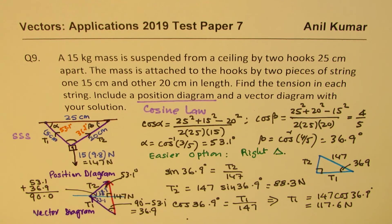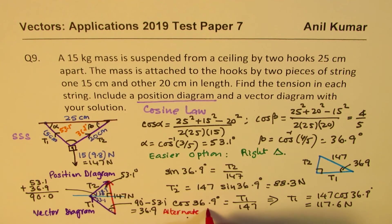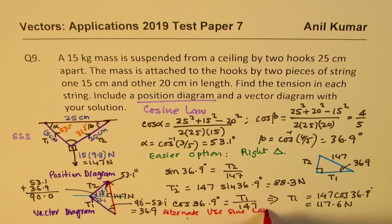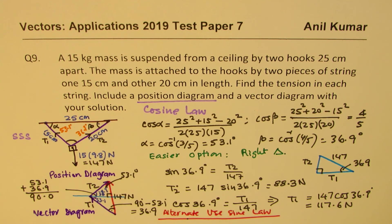That is how we solve it when the angle turns out to be 90°. The alternate approach is to use the sine law. I hope you understand how to draw a position diagram, how to draw a vector diagram, and how to solve for the tensions when all lengths are given. Always remember: multiply the mass by gravitational acceleration (9.8 m/s²) to get the net downward force. Feel free to comment, share your views, and subscribe. Thanks for watching and all the best.